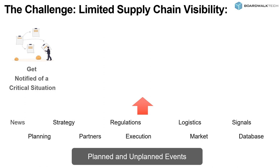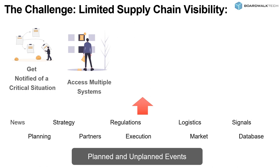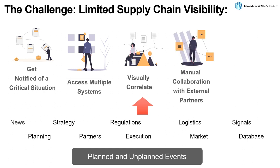Supply chain visibility is really driven by planned and unplanned events. If you think about your business, you've got news coming in about a customer, issues getting products to market, changes in regulations, new customers, new partners, new products, or logistics providers giving you different sets of information. You get notified of some type of critical situation, and we're focusing on two areas: how do you connect and work with all this data, and what do you do when something's changed.